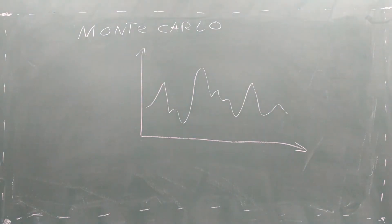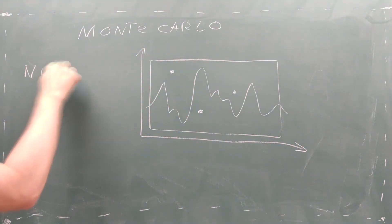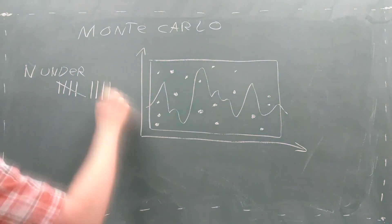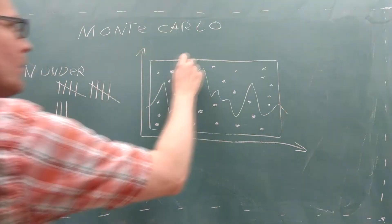The idea behind Monte Carlo integration is this. First, you draw a rectangle around the function you want to integrate. Then, you start selecting random points inside that rectangle. Along the way, you keep track of the number of points that fall underneath the function.